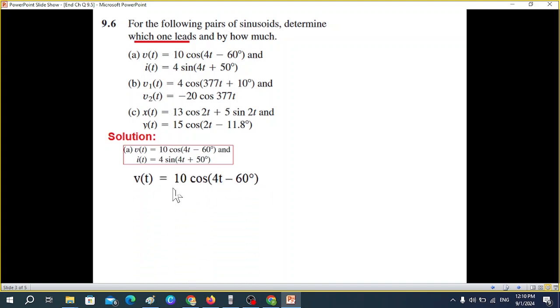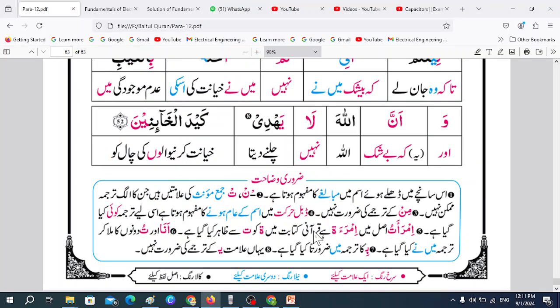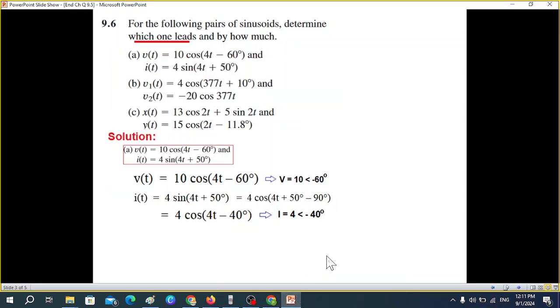Now vT is already in the cosine form: v(t) = 10 cos(t - 60°), and we just write the phasor form magnitude and angle. Then the second signal i(t) = 4 sin(t + 50°), we convert this into cosine by subtracting minus 90. So this will be cos(t + 50° - 90°). This solving will give us 4 cos(t - 40°). And now we can write it in phasor form.